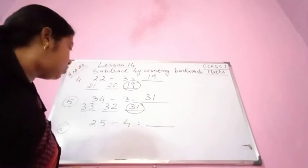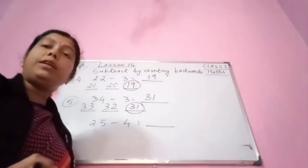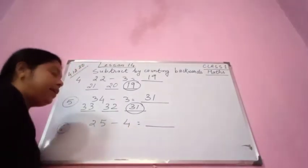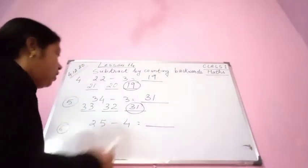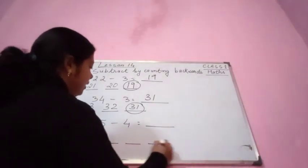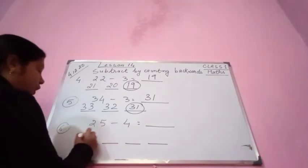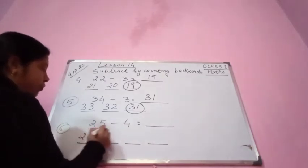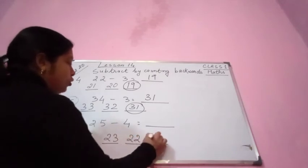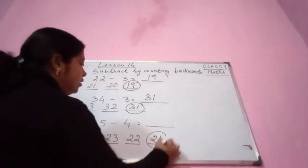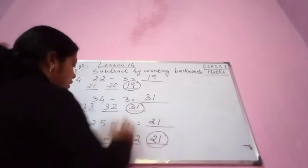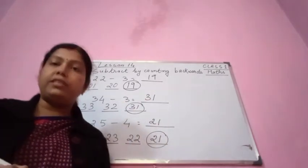Then you see 25 minus 4. We are going to count 4 places before 25. Before 25: 24, 23, 22, 21. So the answer is 21. 25 minus 4 is 21.